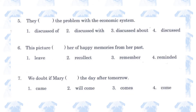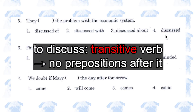Number 5. 'Discussed of / discussed with / discussed about / discussed the problem with the economic system.' Number 4. The verb 'to discuss' is a transitive verb, so you shouldn't add any prepositions like 'about', 'with', or 'of'.